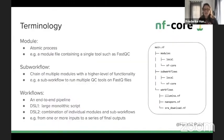Now that we have modules — either local or NF-core — we want to start writing actual workflows and pipelines. There are two different types: subworkflows, which are chains of multiple modules with higher-level functionality like running all QC tools on FASTQ files, and actual workflows which are end-to-end pipelines. In DSL1 we knew these as large monolithic scripts, but in DSL2 a workflow is a combination of modules and subworkflows.